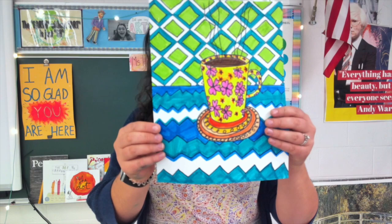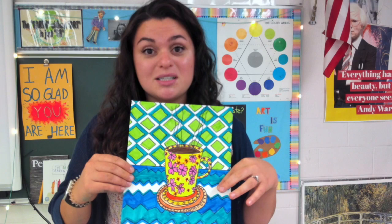So here is our project. It uses pattern and we are going to add space and form to our project. So we already have pattern. We are going to make our object look like it is 3D and that it is sitting on something which gives it space.